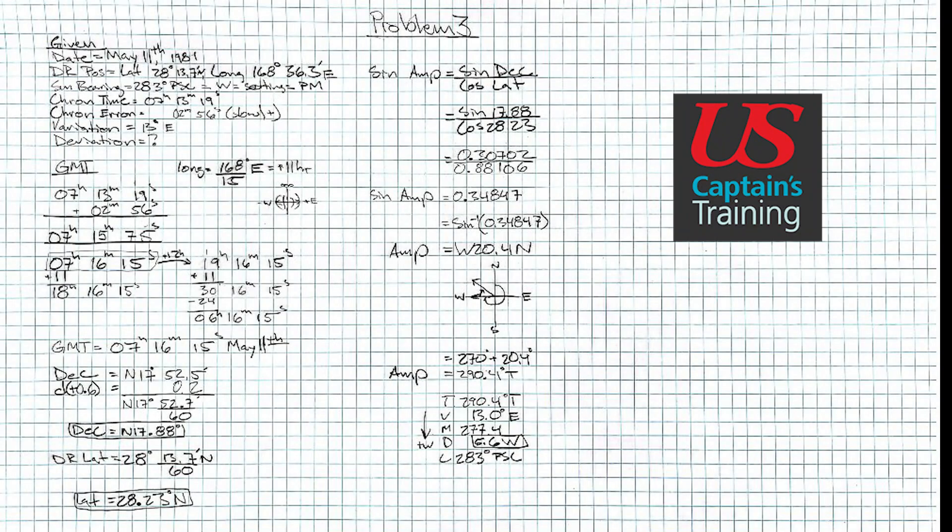Here we find ourselves looking at amplitude practice problem 3 solution. This problem is quite straightforward. One notable part is that your longitude is quite large, and when you divide it by 15 to get your local time, it's 11 hours different than your chronometer time. So that's an interesting part of this problem. Besides that, everything else is quite straightforward. Take your time here and enjoy the process.